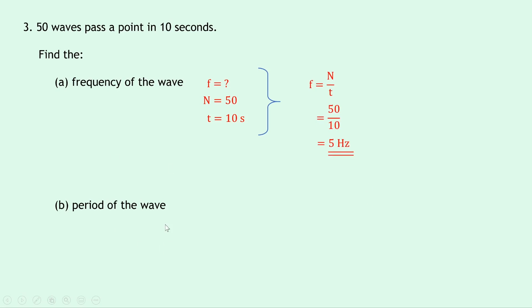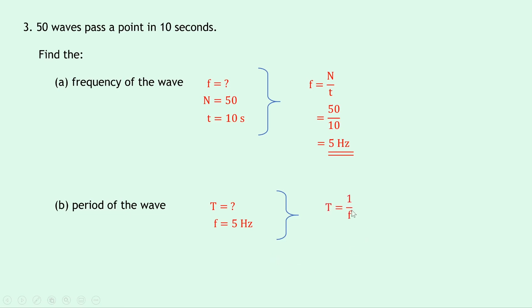And part B, the period of the wave. We're trying to find the period and we now know the frequency from part A is 5 hertz. Writing down our relationship between the period and frequency, we have T equals 1 over F. Putting in the numbers, that gives us 1 over 5, which is equal to 0.2 seconds.